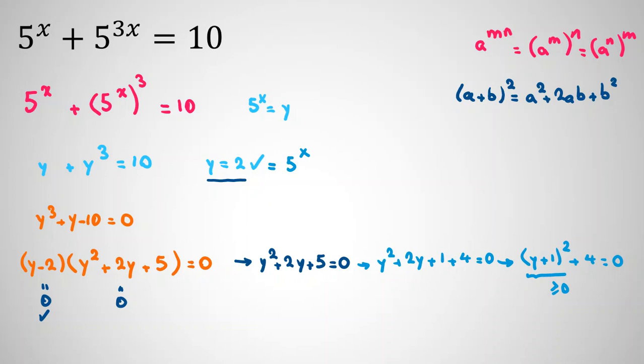So in the next step, we can conclude that x is, you should use the definition of logarithm. If a equals b to the m, then it is equivalent that m equals log base b of a. Here, we say x equals log base 5 of 2. So x has one answer in real numbers, and we prove this.